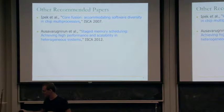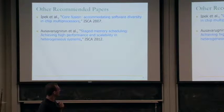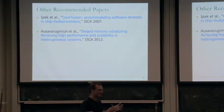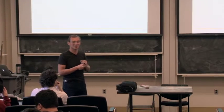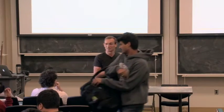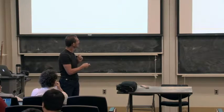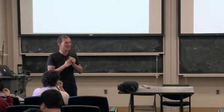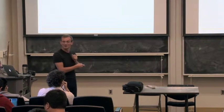Other recommended papers I probably won't cover are related to heterogeneity — I randomly picked two of them. One is on core fusion, which we talked about briefly last time: you start with small cores and somehow fuse them to operate as a large core. It's a nightmare to implement — very difficult to get working without losing significant performance. The other is a paper on staged memory scheduling, looking at how to do memory scheduling when you have a CPU and GPU on the same chip sharing the memory controller. This could give you some ideas for research.